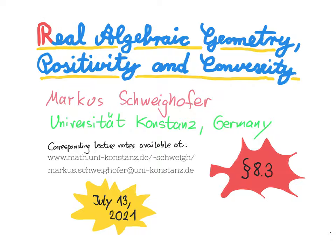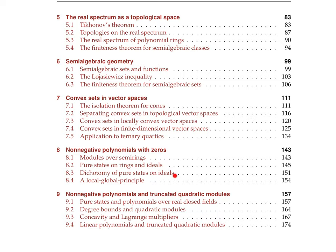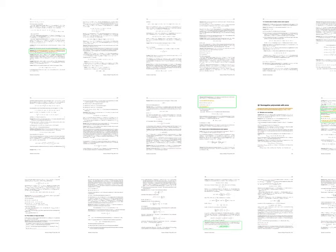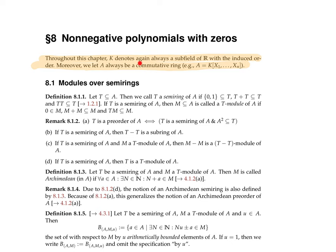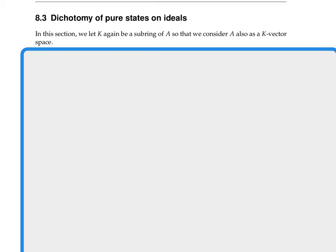Welcome to today's lecture. In our lecture notes we come to section 8.3 about dichotomy of pure states on ideals. Note that we had this general hypothesis in this chapter 8 where k was always a subfield of the reals equipped with induced order, and A was a commutative ring. In this subsection we now also suppose that k is at the same time a subring of A.